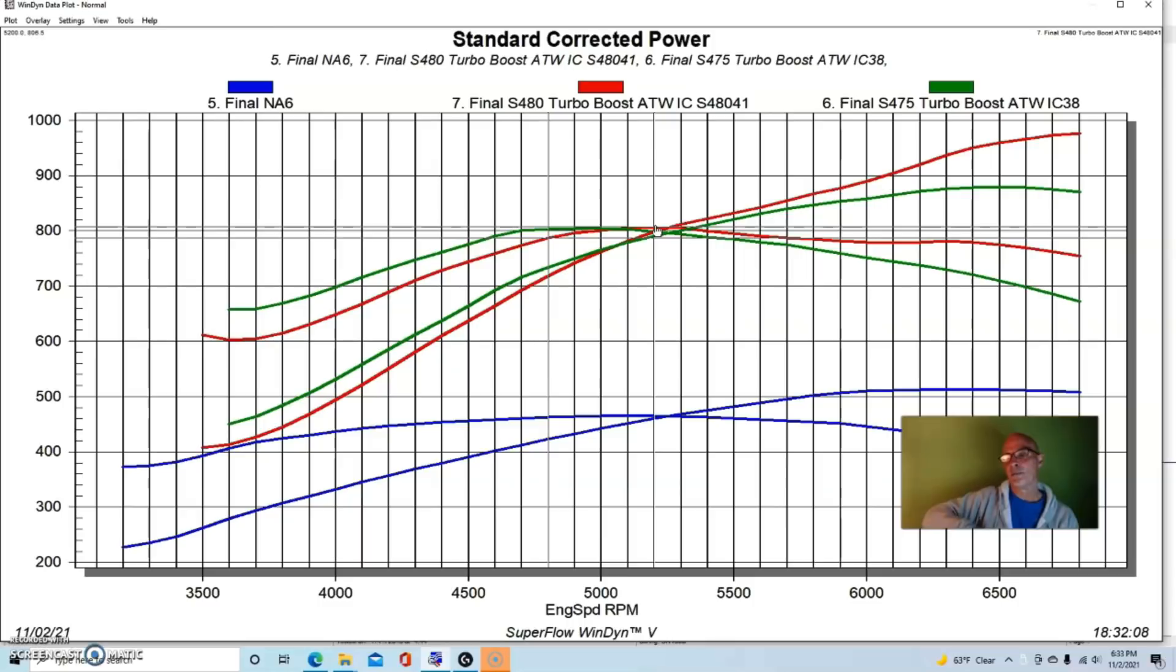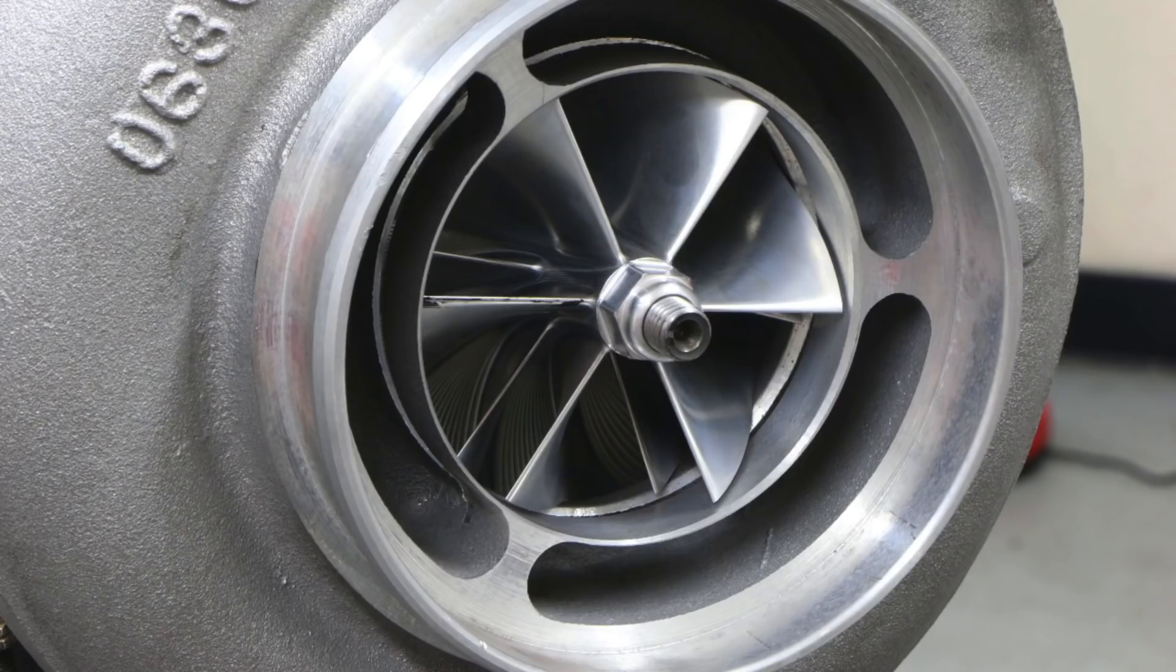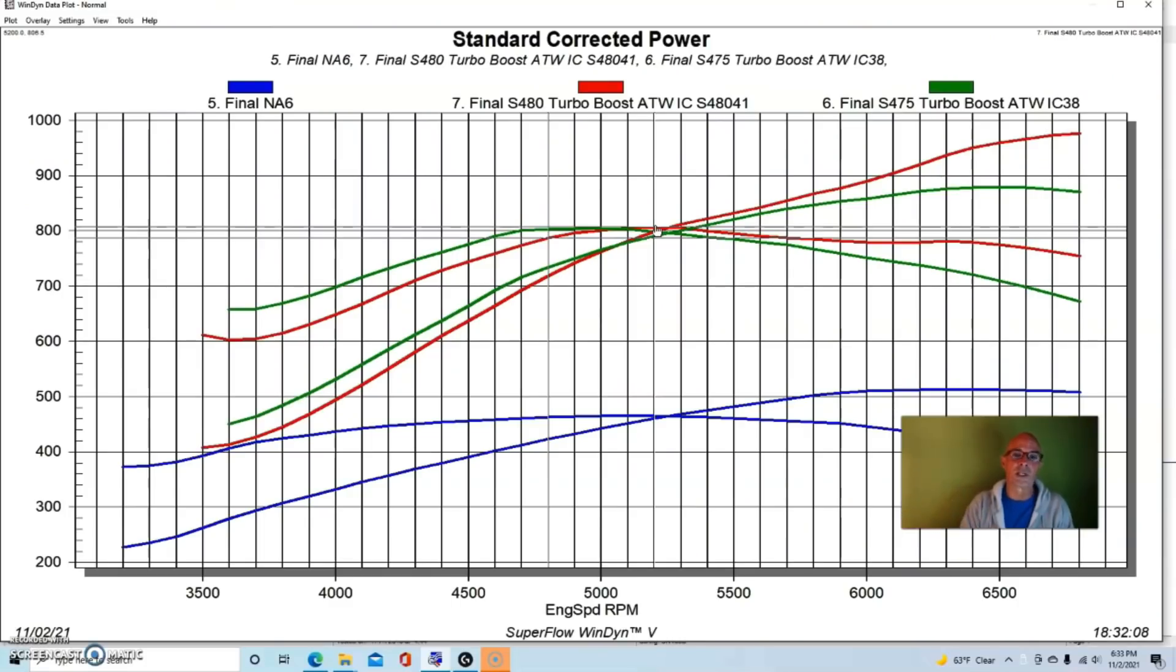Where we would start to see a big change between these two turbos is when we really started to turn these up and we're getting near the flow limit of the S475, and then the S480 could make more power because it's a bigger turbo.